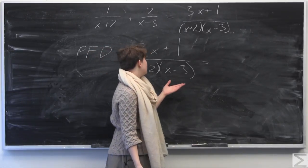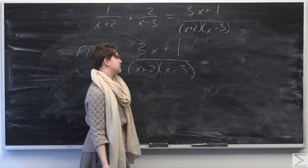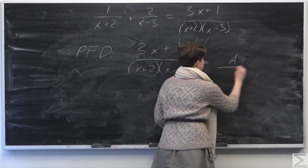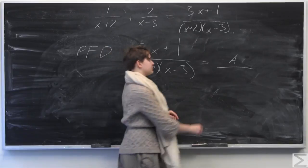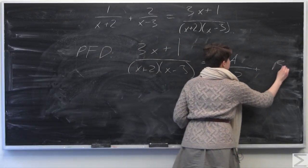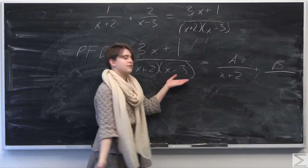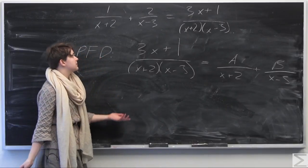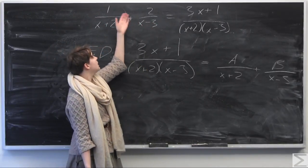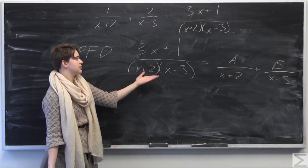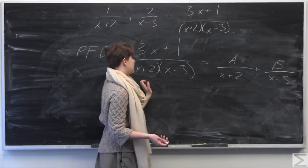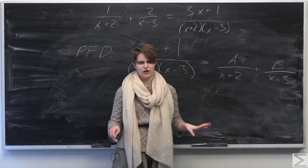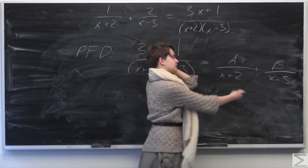We have two factors in the denominator: (x+2) and (x−3). So we need two terms: A over (x+2) plus B over (x−3). What we're trying to do is break up this quotient of polynomials into something simpler, because the denominator is a quadratic polynomial — and that's difficult to integrate in calculus. It's much easier to integrate something like these individual terms.